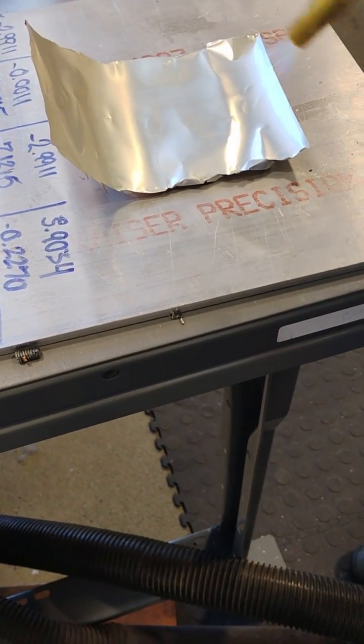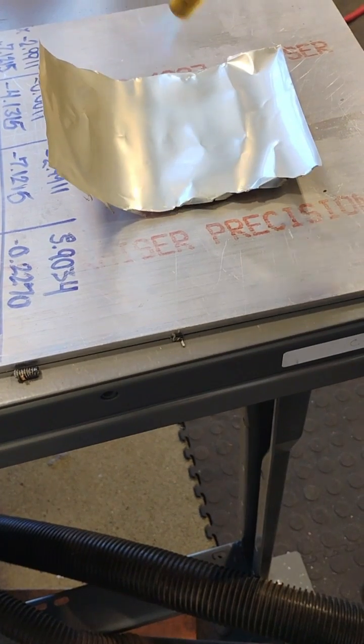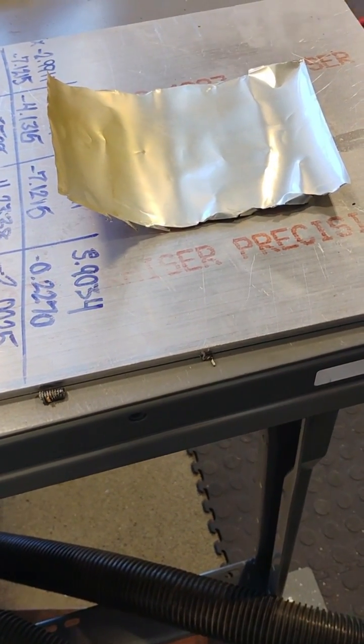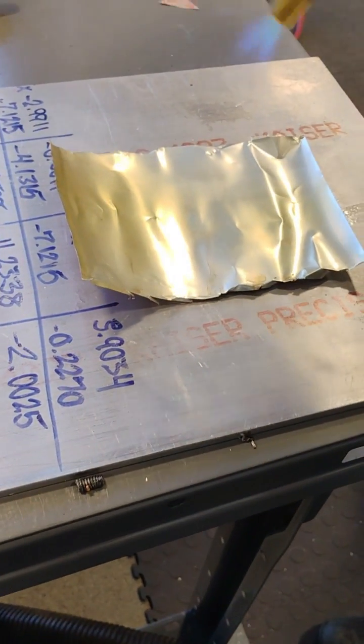Be careful because if you heat it up just a little bit too much, it'll turn into a big pile of molten aluminum. You can see how it's kind of flattening out a little bit. That's the stress relief coming out.